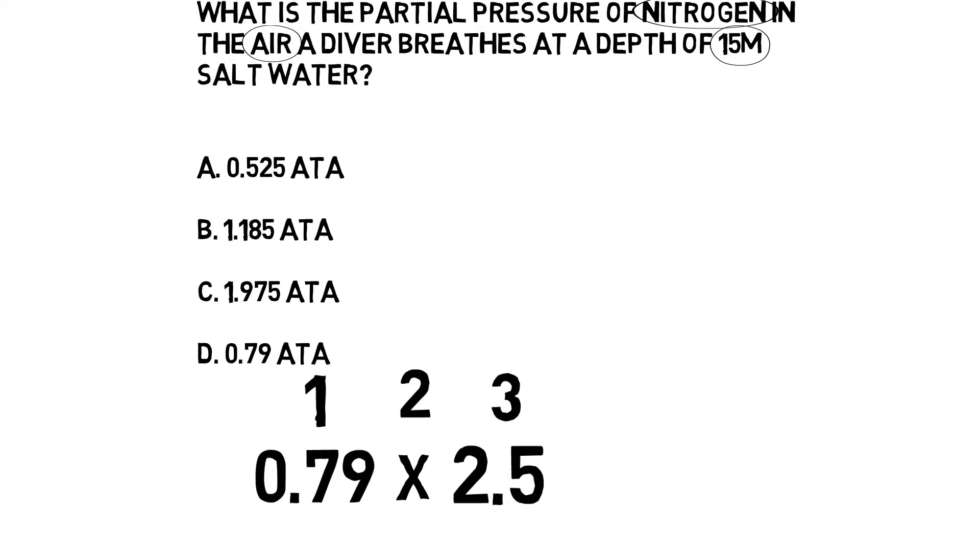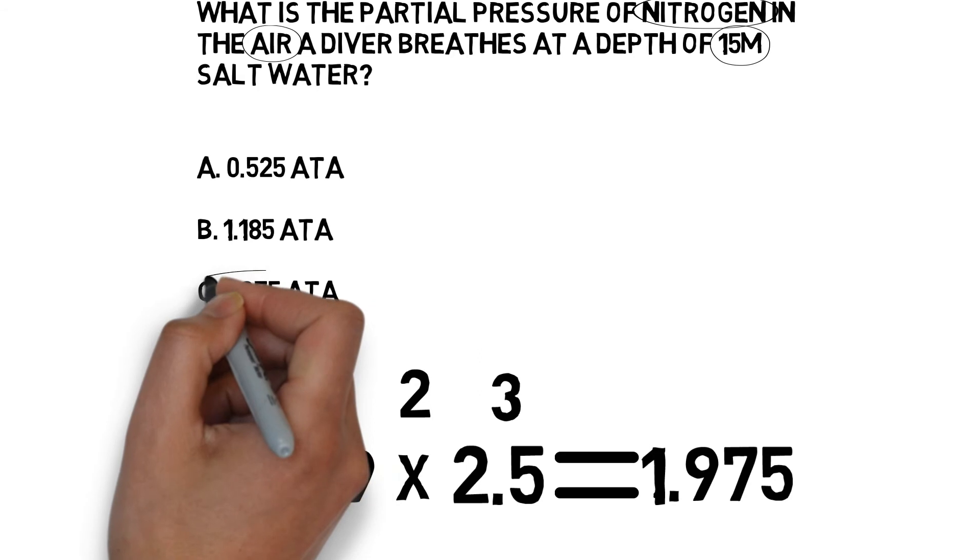That will show us that our total partial pressure of nitrogen, if we are breathing air at a depth of 15 meters in salt water, is answer C: 1.975 atmospheres.